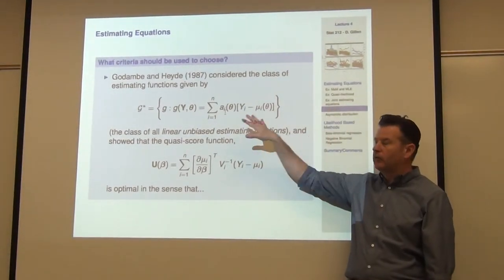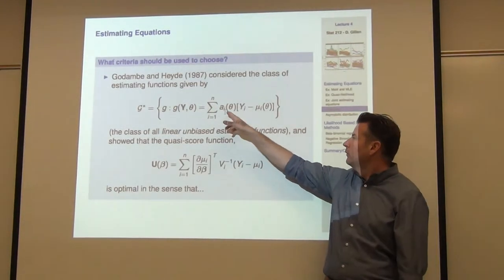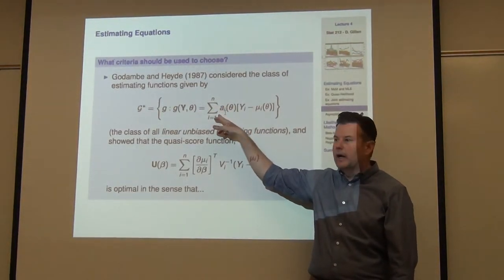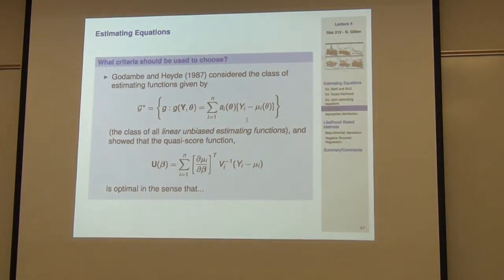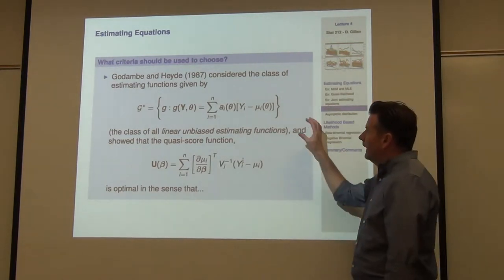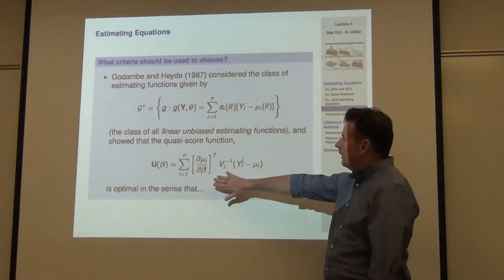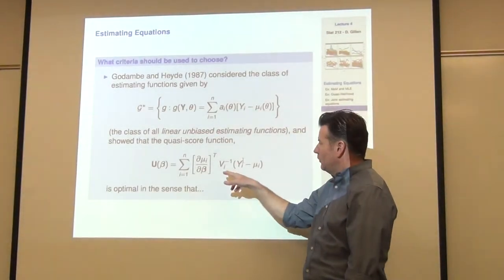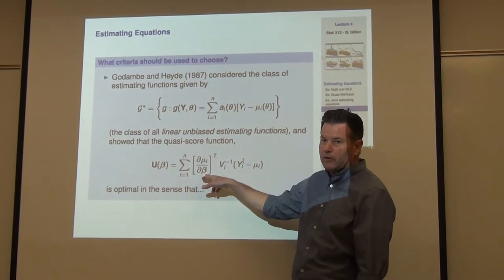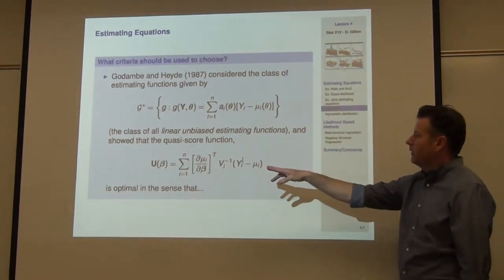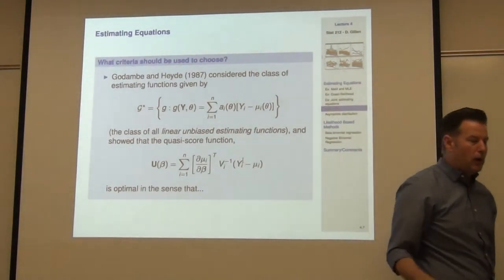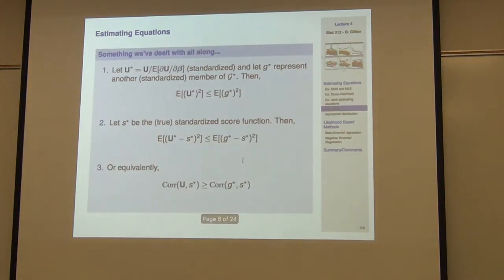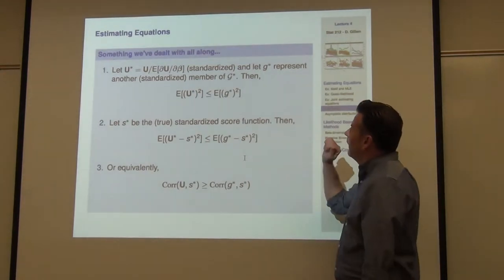So this looks very familiar to your form. The question is just, they said they allow for a general Ai there that can depend upon unknown parameters. And so what they had found was that in their '87 paper, the quasi-score going back to Wedderburn, that thing that you guys have seen where I've got the nonlinear transformation of the mean linked to my linear predictor times the inverse of the variance of yi, taking that to be my multiplier Ai or my weight if you will, is optimal in the following sense.